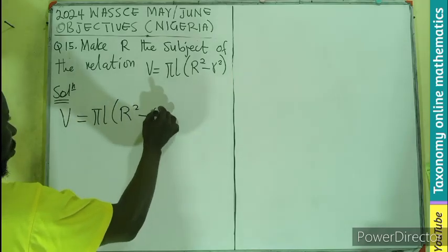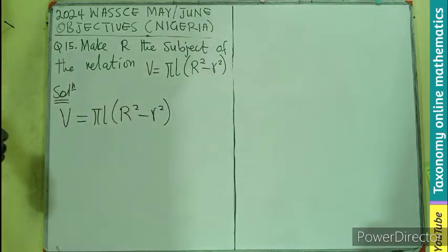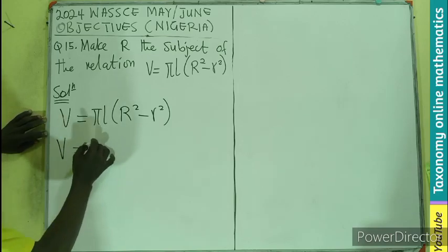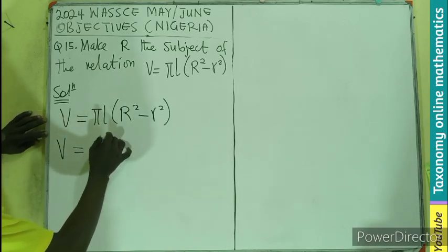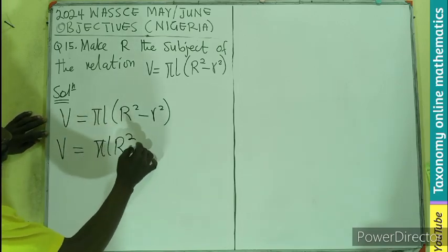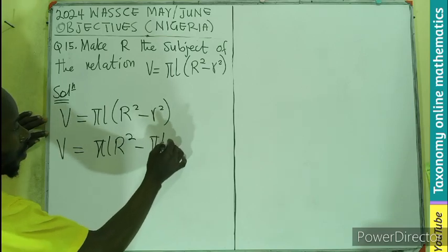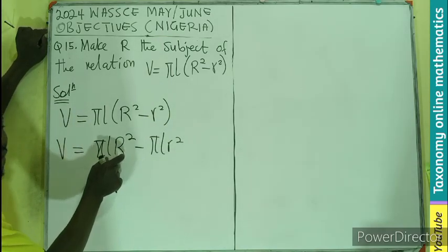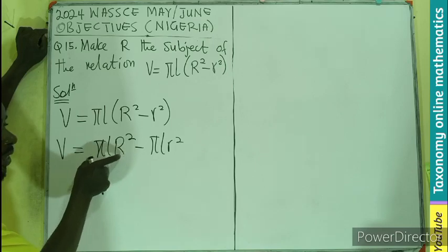R capital square minus small letter r square. If you expand, V will be equals to π L R square minus π L small r square. Now the R capital is free from the bracket.